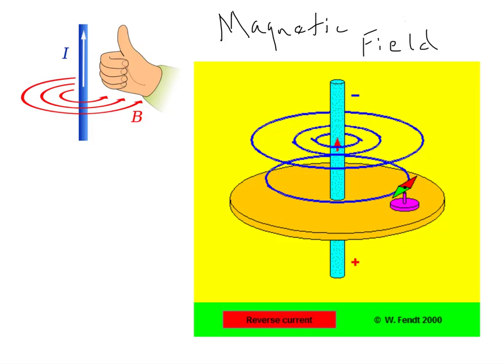We're back to our slides and a chance to look at the magnetic field that comes into existence around a wire that's carrying a current. Remember, the first thing is that all magnetic fields arise from moving charges.